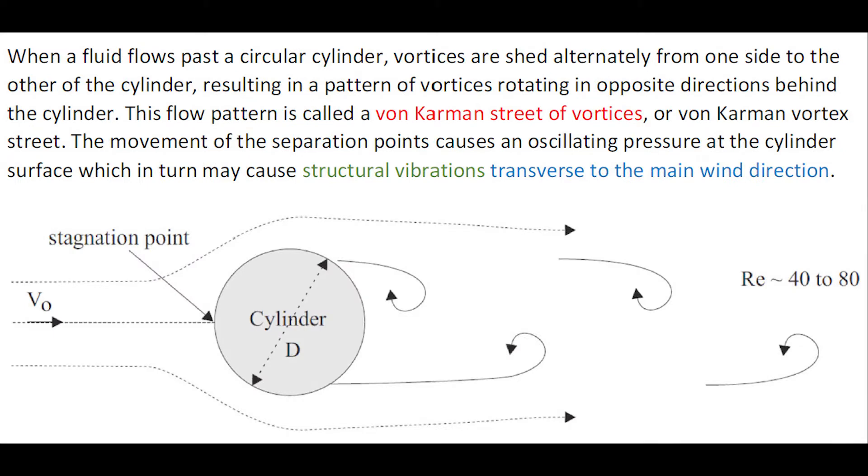When a fluid flows past a circular cylinder, vortices are shed alternately from one side to the other of the cylinder, resulting in a pattern of vortices rotating in opposite directions behind the cylinder. This flow pattern is called the von Karman vortex street or von Karman street of vortices. The movement of the separation points causes an oscillating pressure at the cylinder surface, which in turn may cause structural vibrations in a direction transverse to the main wind direction.